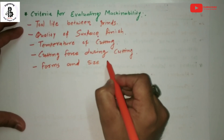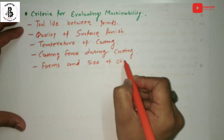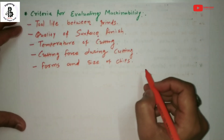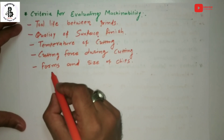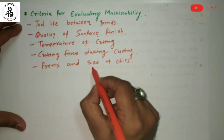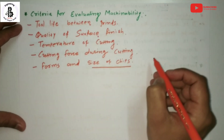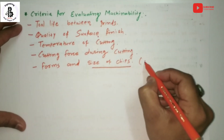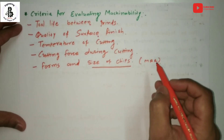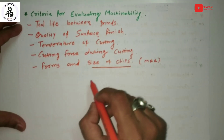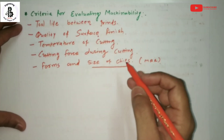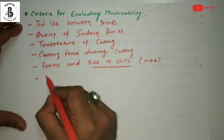The next criterion is forms and size of chips. The chip geometry and size are related to the metal removal rate (MRR). How much MRR takes place for a particular material with respect to particular parameters is one kind of measurement of the machinability of a product.